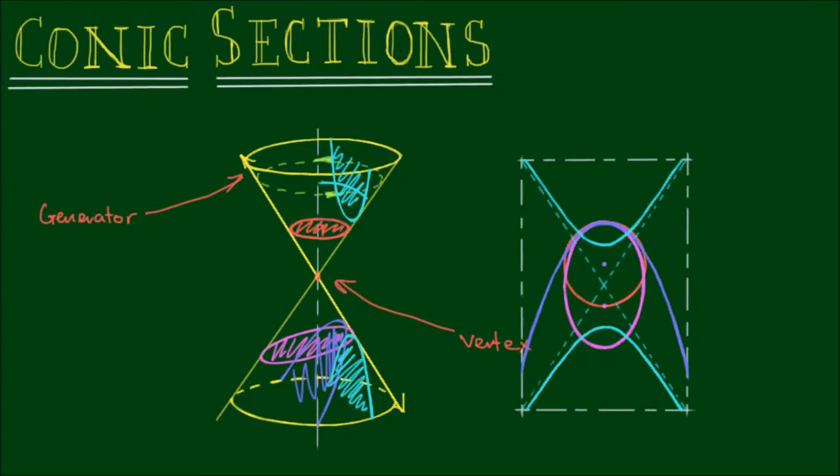Now in the previous few videos, we looked at locus problems in the Cartesian plane. Now importantly, conic sections can be formed using a special locus definition that involves a fixed point called the focus,